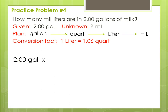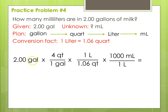Beginning with our given — 2.00 gallons — we go from gallons to quarts: times 4 quarts in a gallon. Then from quarts to liters using that conversion: for every one liter, 1.06 quarts. Then from liters to milliliters: 1,000 milliliters in a liter. In each conversion, we put the unit we want in the numerator and the unit we're getting rid of in the denominator. It's useful to set up this plan like a roadmap so you can figure out at each step what unit you want and what unit you get rid of — the unit you're getting rid of is the one that came before.